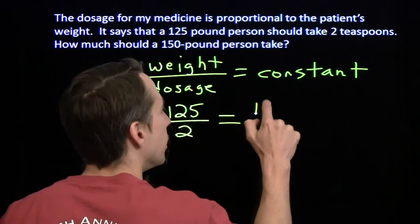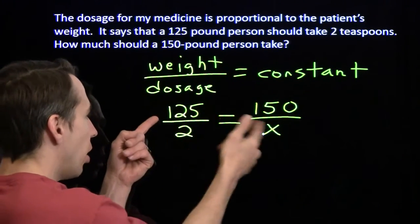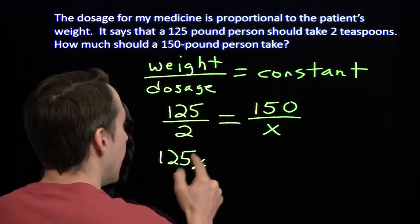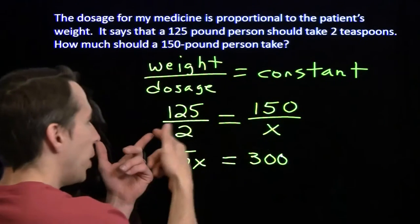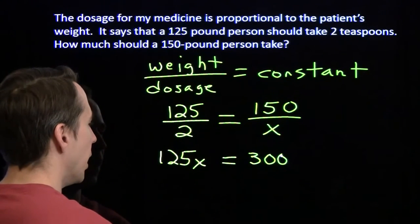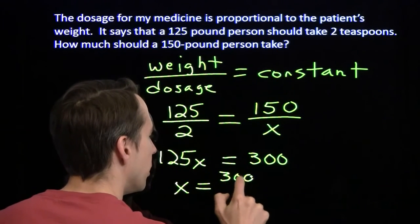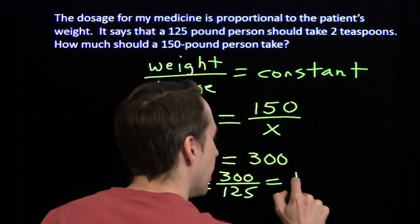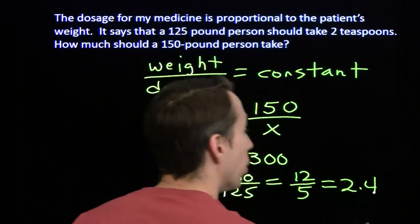So I want to get just the right amount. I know that the ratio of the weight to the dosage is constant, and we can figure out what that constant is: a 125-pound person takes 2 teaspoons. Now I weigh 150 pounds, so we'll let my dosage be x, and now we have an equation we know how to solve. Multiply both sides by 2x — we'll get 125x on one side, and 2 times 150 gives us 300 on the other. We'll divide both sides by 125, take out a common factor of 25, and we'll be left with 12 over 5, which is 2.4 teaspoons.